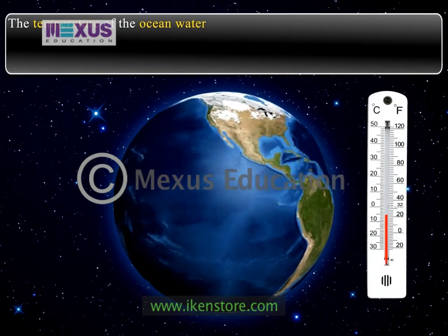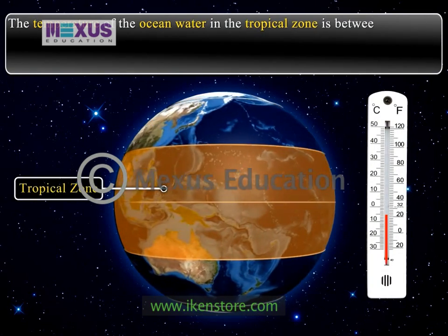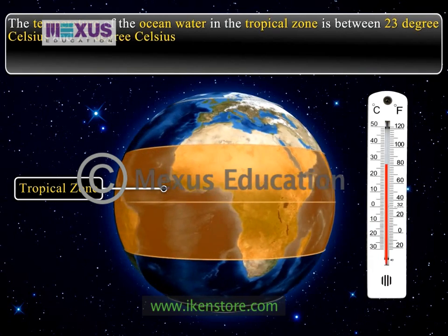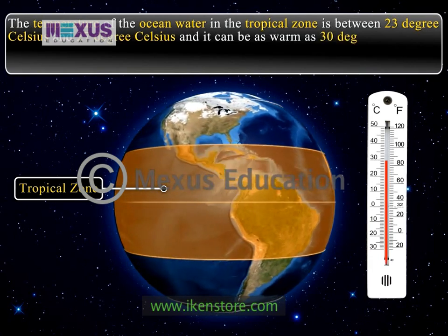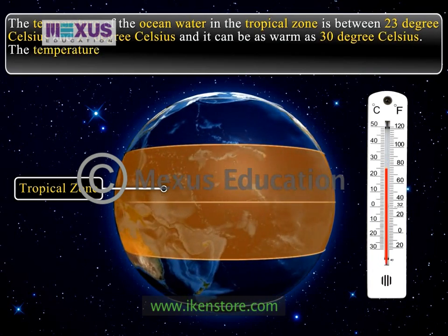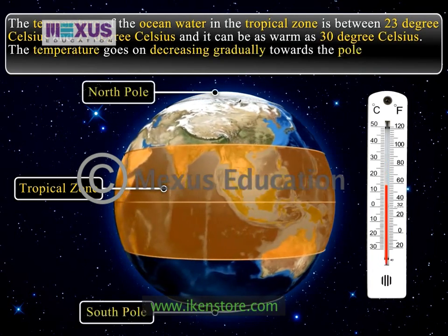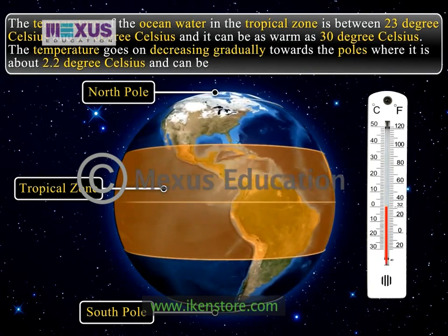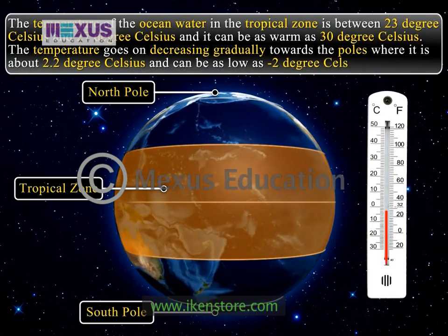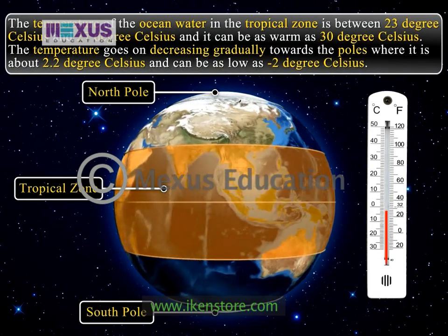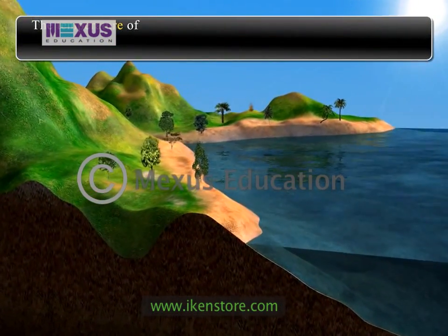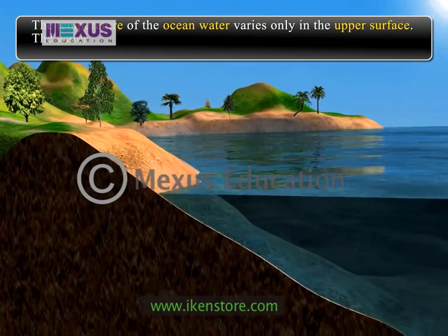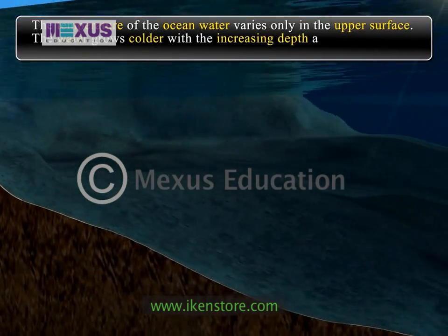The temperature of ocean water in the tropical zone is between 23 and 27 degrees Celsius, and can be as warm as 30 degrees Celsius. The temperature decreases gradually towards the poles, where it is about 2.2 degrees Celsius and can be as low as minus 2 degrees Celsius. The temperature of ocean water varies mainly in the upper surface, becoming colder with increasing depth.